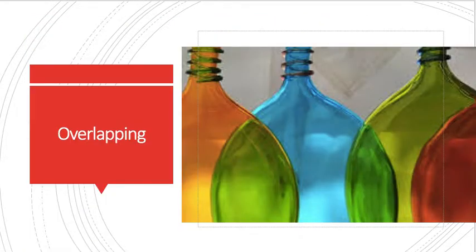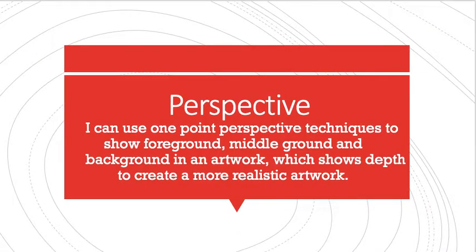Now, this one we already talked about, but I just want to make sure we have this in our vocabulary, and that is overlapping because we are going to be doing that in our artwork. So just as a review, write down overlapping is when one thing appears to be in front of another. Overlapping when something appears to be in front of another. Again, our goal for this project is I can use one-point perspective techniques to show foreground, middle ground, and background in an artwork which shows depth to create a more realistic artwork.